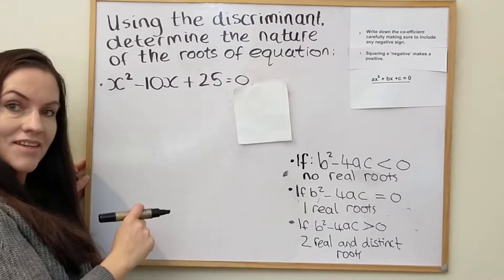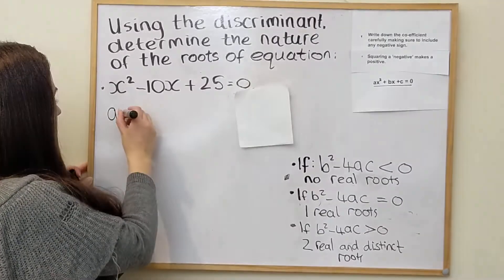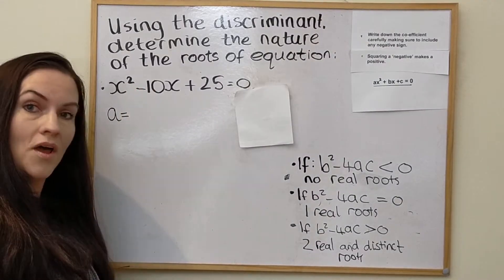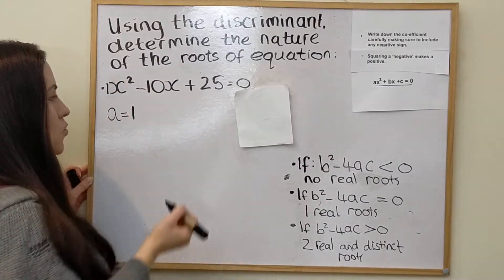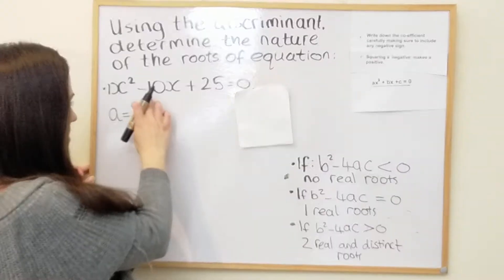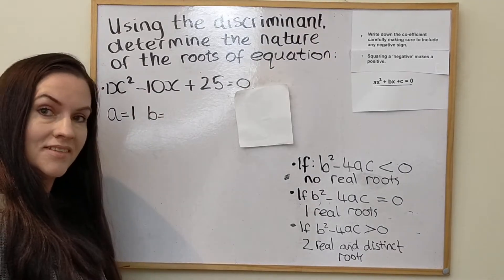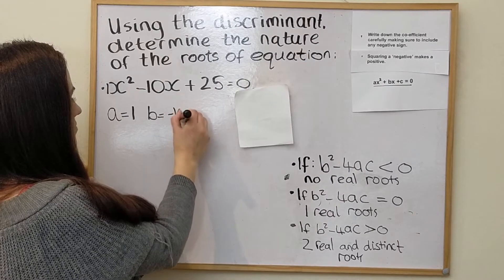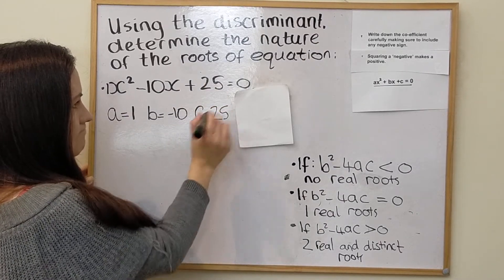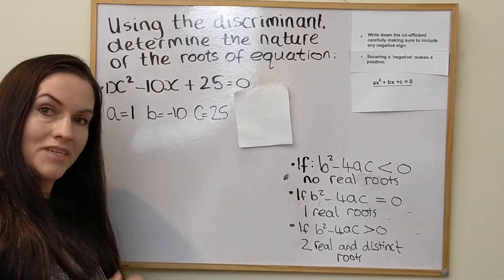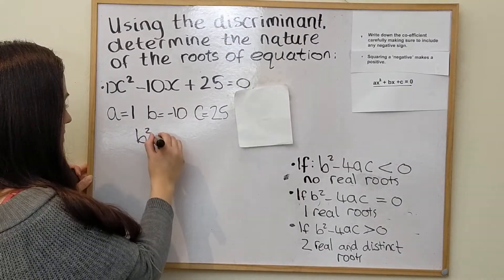For x squared minus 10x plus 25, we identify the coefficients. The a value — because there's no written number in front of x squared — is 1 (there's an invisible one, not zero). b is minus 10, and c is 25.